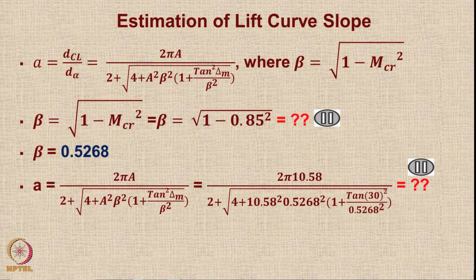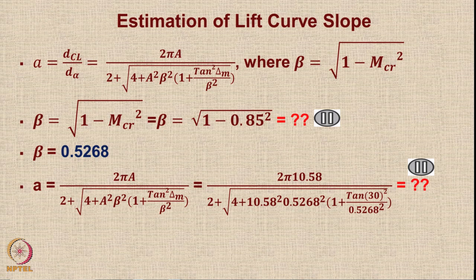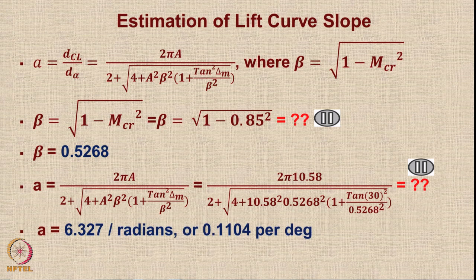Next, calculate the lift curve slope a, where the values of A, beta, and delta_m are written on the right-hand side. Solve the expression to get the lift curve slope. The answer is 6.327 per radian. Converting to degrees: multiply by π and divide by 180, giving 0.1104 per degree.